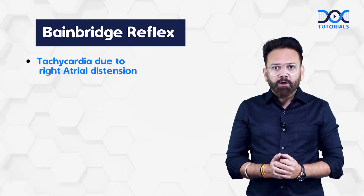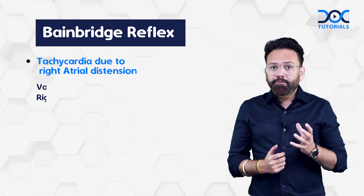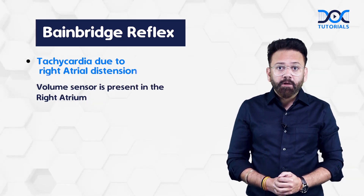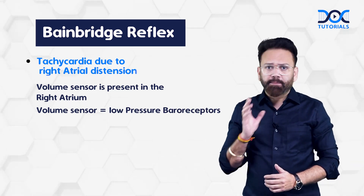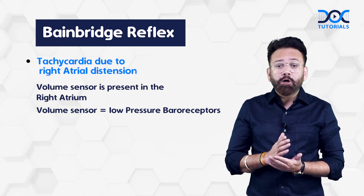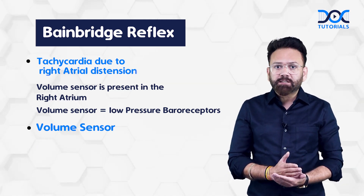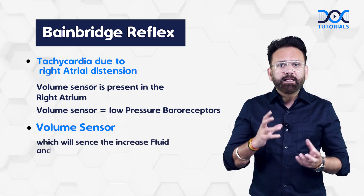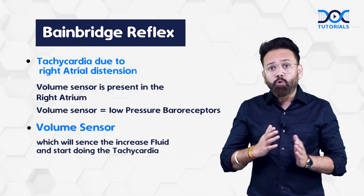So why will there be tachycardia? Whenever there is an increase in fluid, there are volume sensors present mainly in the right atrium. Volume sensors are also called low pressure baroreceptors — not high pressure baroreceptors. These low pressure baroreceptors sense the increased fluid and initiate tachycardia so that the fluid can go out.